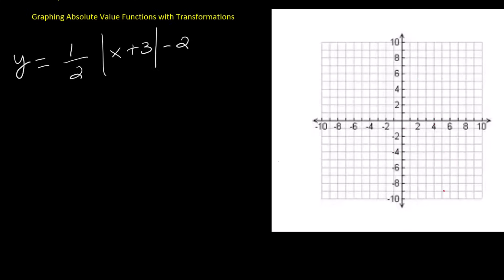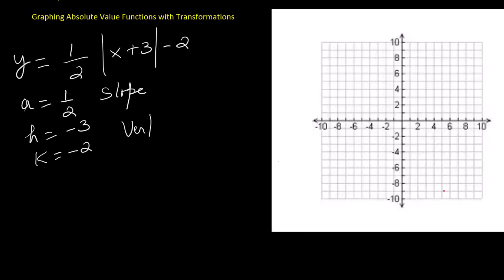Let's try the function y equals 1 half times the absolute value of x plus 3 minus 2. In the transformation form, the value of a is 1 half, the value of h is negative 3, and the value of k is negative 2. That means the vertex is at negative 3 comma negative 2. On the coordinate plane, we first plot the vertex at negative 3 comma negative 2. Since the slope is 1 half, the graph opens upward but is wider and less steep than the parent function. From the vertex, we go up 1 unit and 2 units to the right to plot a point. We also go up 1 unit and 2 units to the left to plot a matching point.